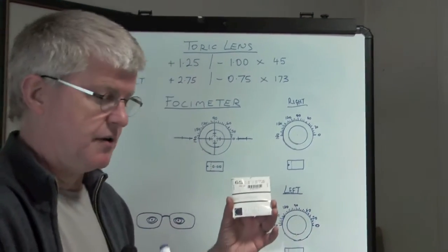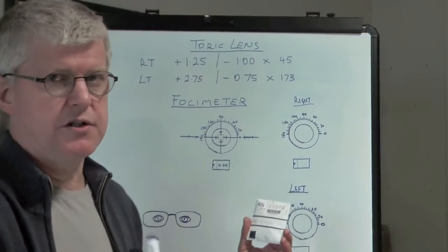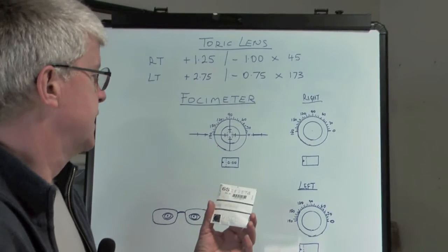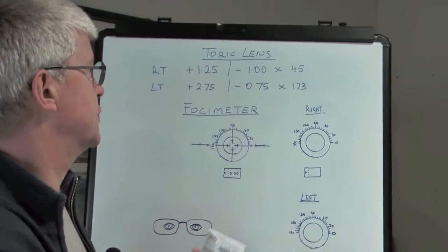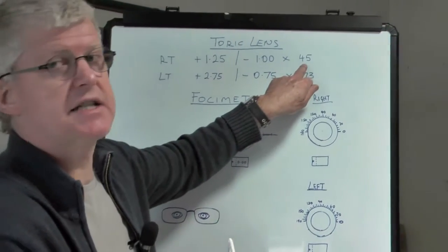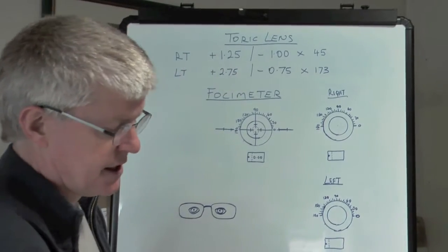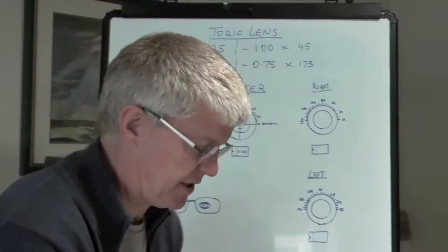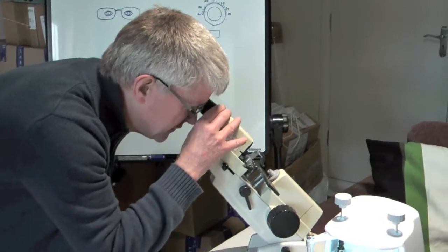I want to show you how to use the focimeter. The best way to do it, if you're not familiar with this, is to do it in a systematic way. What I would do is first of all set the axis, which is 45. This dial here adjusts the axis, so you set the axis at 45 degrees.